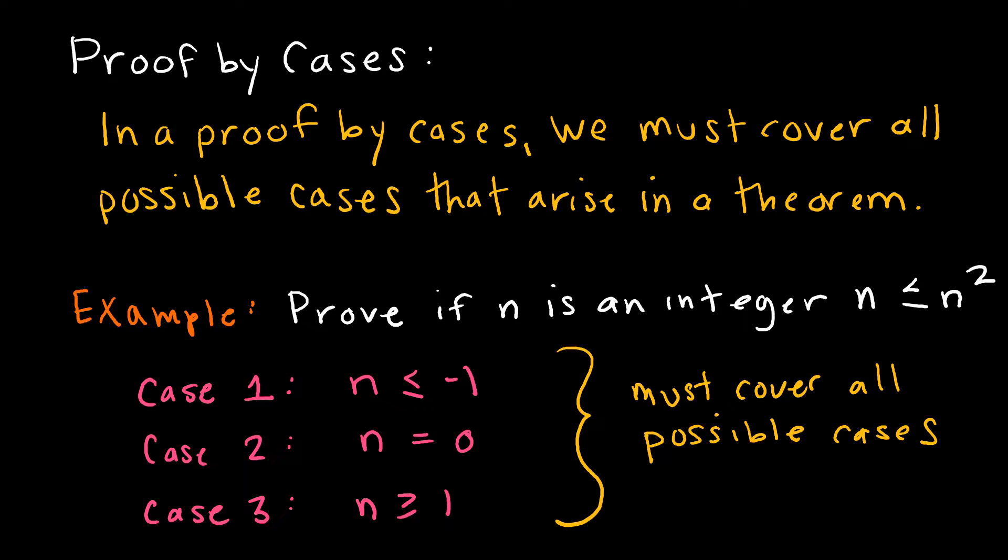For instance, let's say I'm trying to prove that if n is an integer, then n is less than or equal to n squared. So in order for me to prove this, I might want to take a look at an n value that is negative, less than or equal to negative 1, an n value that is 0, don't forget this one, and an n value that is positive. So I'm covering all of those cases.